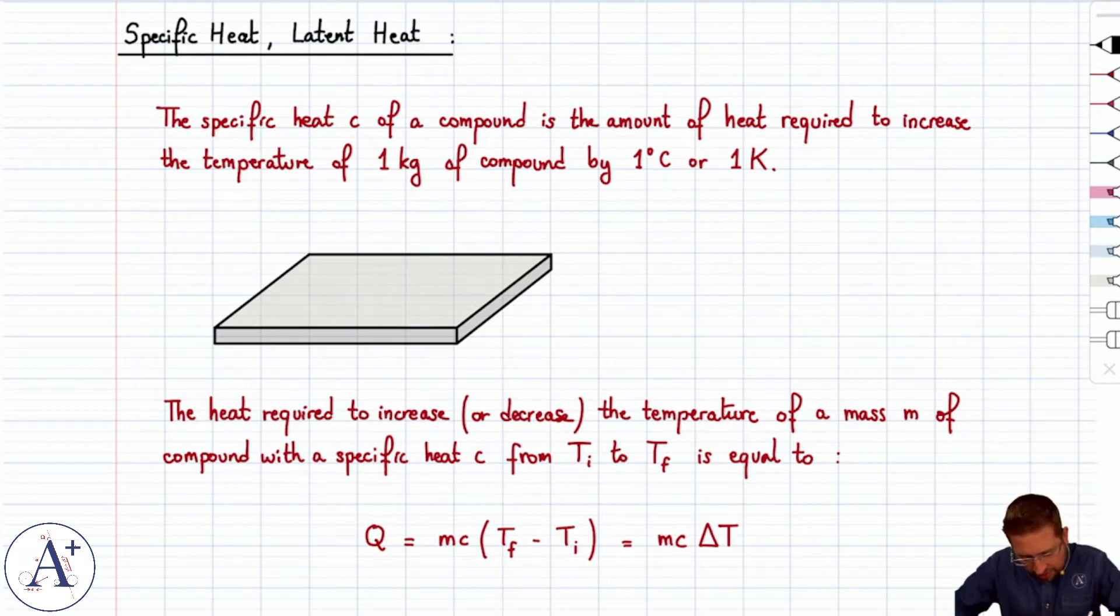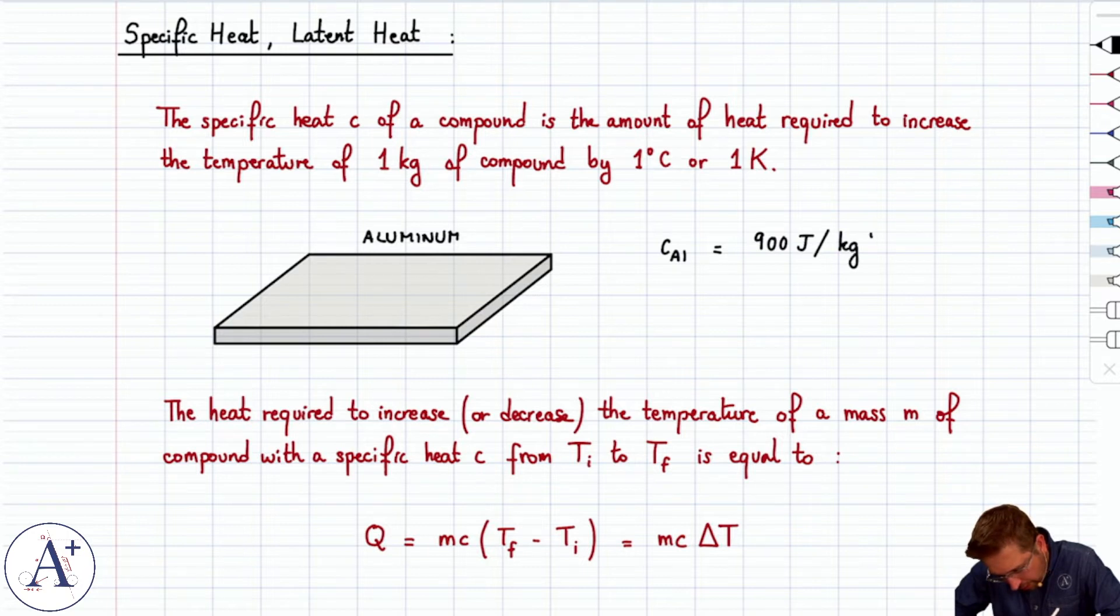So if you have an aluminum slab here, the specific heat of aluminum is approximately 900 joules per kilogram degree Celsius, or degree Kelvin.